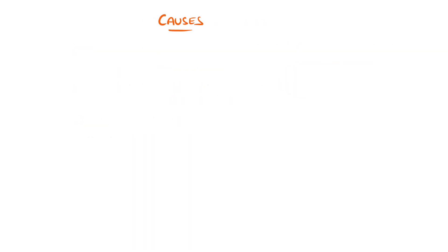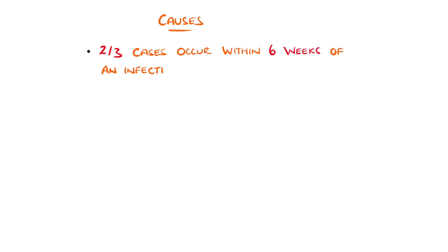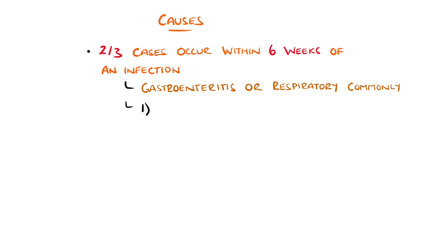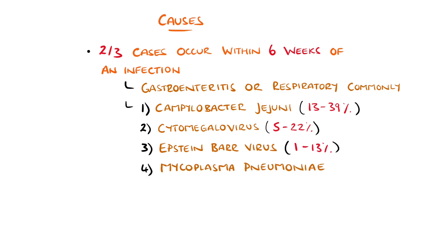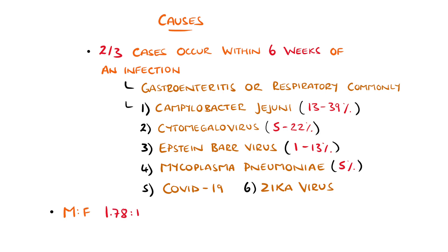Two out of three cases occur within six weeks of an infection, most commonly after an episode of gastroenteritis or an upper respiratory tract infection. The most commonly identified infectious triggers include Campylobacter jejuni in up to 39% of cases, cytomegalovirus in up to 22%, Epstein-Barr virus in up to 13%, and Mycoplasma pneumoniae in around 5%. There have also been cases associated with COVID and Zika virus. Overall, Guillain-Barré syndrome is slightly more common in males than females, estimated at around 1.78 to 1, with a mean age of onset of 40 years.